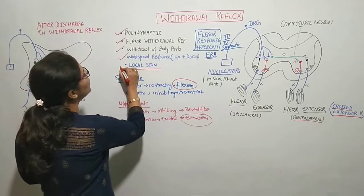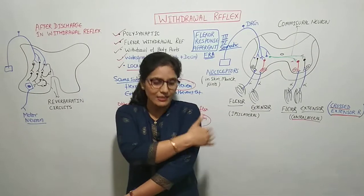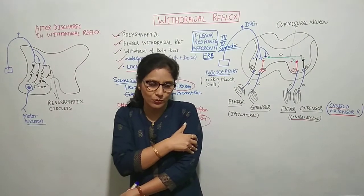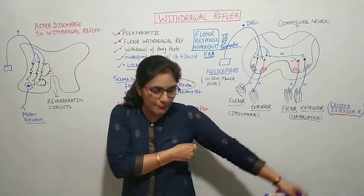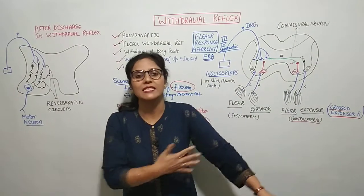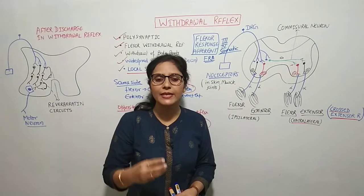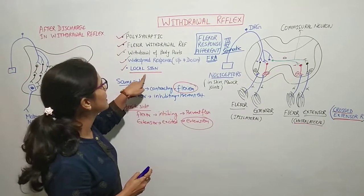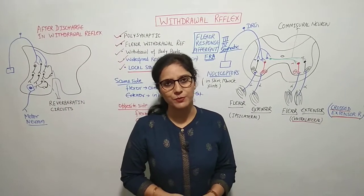There is also the concept of local sign: the actual response depends on which side the painful stimulus comes from. If the stimulus is from the lateral side, there will be abduction along with flexion. If the stimulus is from the medial side, there will be adduction. This property — where the response reflects the location of the stimulus — is called local sign. These are all the characteristics of the withdrawal reflex. Thank you so much, students.